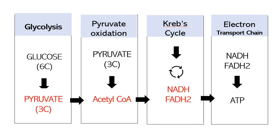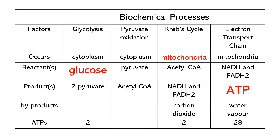These are the biochemical processes in cellular respiration: glycolysis, pyruvate oxidation, the Krebs cycle, and electron transport chain. This is the summary of what we have discussed today. We studied the biochemical processes involved in cellular respiration — glycolysis, pyruvate oxidation, Krebs cycle, and electron transport chain.